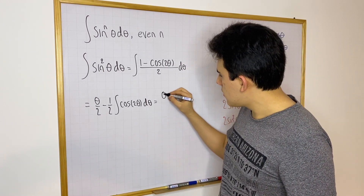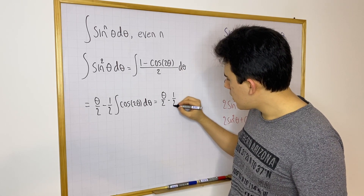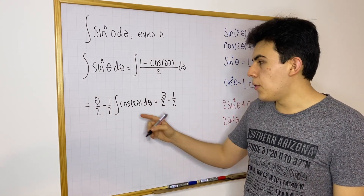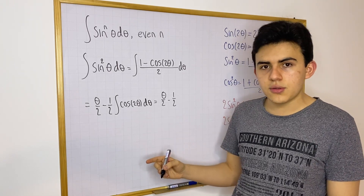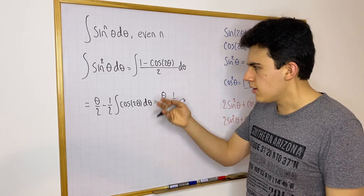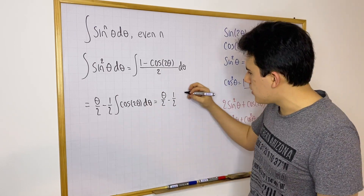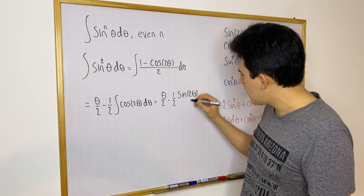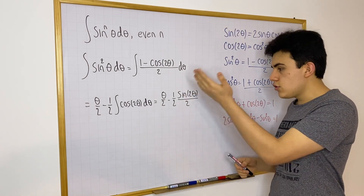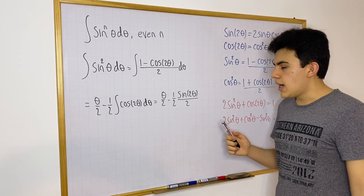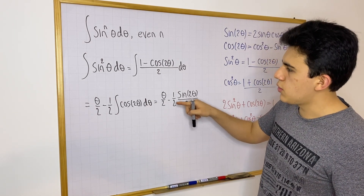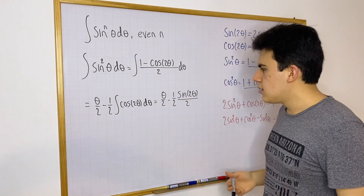Since the derivative of sine(2θ) gives 2 times cosine(2θ), but we only need cosine(2θ), we divide sine(2θ) by 2. So if you differentiate sine(2θ) divided by 2, you get cosine(2θ) times 2 divided by 2, and the 2s cancel, giving back cosine(2θ) divided by 2 — which matches our integrand. That confirms the integral of cosine(2θ)/2 is sine(2θ)/4.